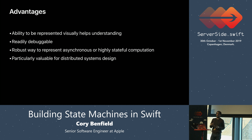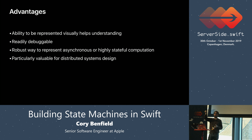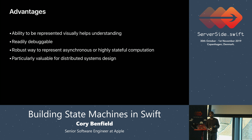That also lets you understand when your model of a computation is incomplete. If you write down all the state transitions in your program, you can suddenly see: oh, it seems like someone ought to be able to cancel their order while they're in the pending shopping basket state, but they can't — and if they try, something bad will happen. An enormous number of us are visual thinkers, and it helps to have tools that let us see our programs visually.